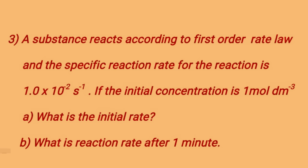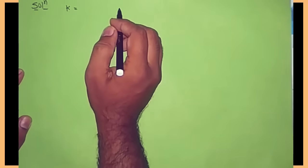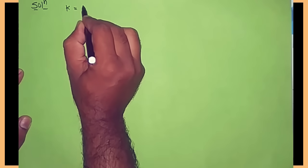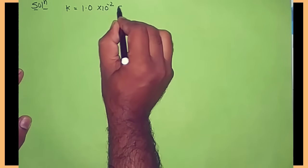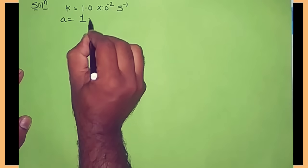A substance reacts according to the first order rate law and the specific reaction rate is 1.0 into 10 raised to minus 2 second inverse. The initial concentration is 1 mole per dm cube. We have to find the initial rate and the reaction rate after 1 minute.